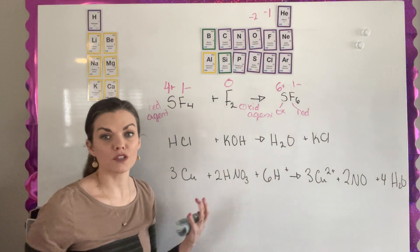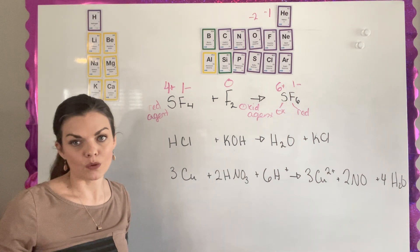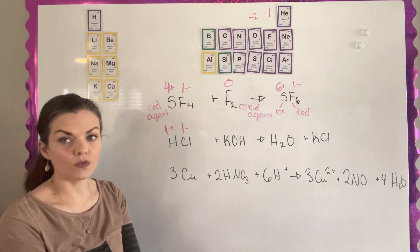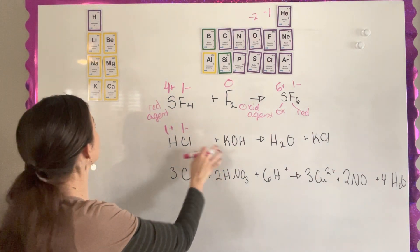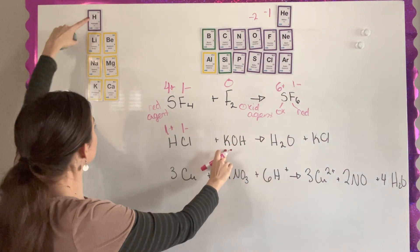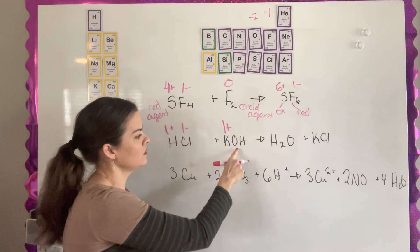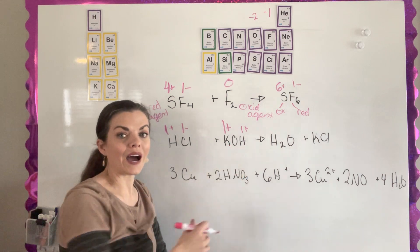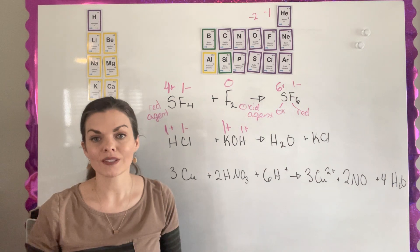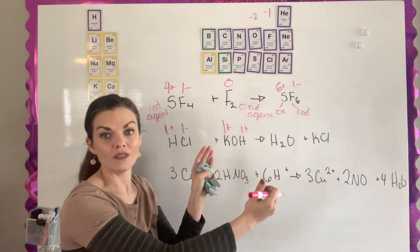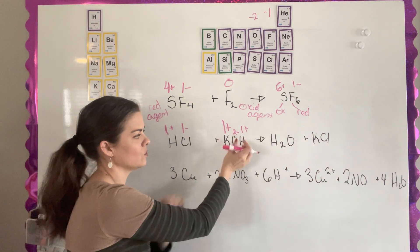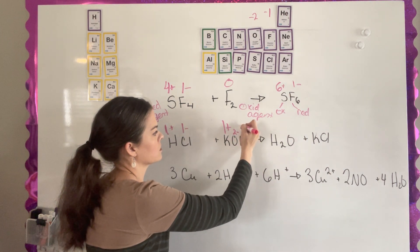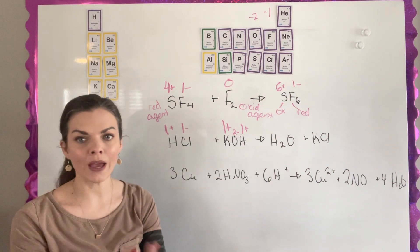For the second equation, first figure out oxidation states to see if electrons are moving. Hydrogen has an oxidation state of plus one and chlorine is negative one. For potassium hydroxide, it's ionic because it has a metal and a non-metal, so potassium (group 1A) is plus one. For hydroxide, hydrogen is plus one; the whole hydroxide ion has a charge of negative one, so oxygen must be negative two.